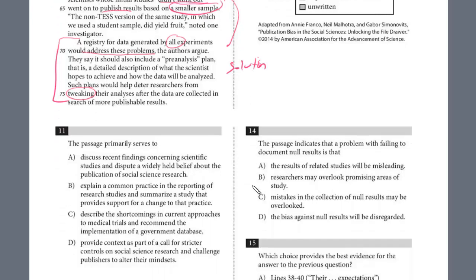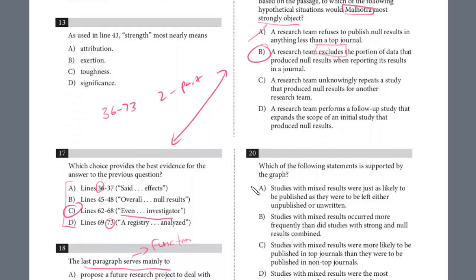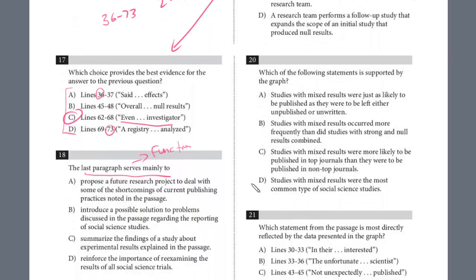And so let's look at the answer choices for number 18. What does it serve to do? Propose a future research project to deal with some of the shortcomings of current publishing practices noted. This is not a research problem. They have a proposal as a solution. B, you can see right away, it's a possible solution to problems discussed in the passage regarding the reporting of social science studies, the tweaking, the selectively using. The answer is B.